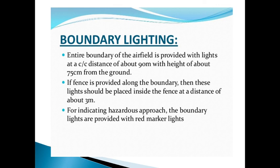Next is boundary lighting. The airport boundary must be lighted properly so that when a pilot identifies the airport, he can recognize its locality by seeing the lights. Around the boundary wall, about three meters inside, there are continuously provided lights so the pilot can confirm this is the airport he is supposed to land at. Boundary lights are red-colored, highly charged, and slightly above ground level.